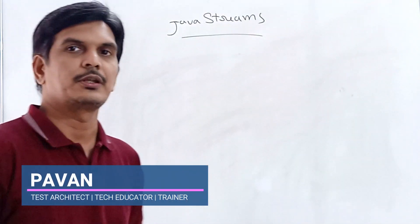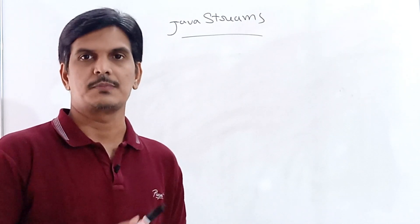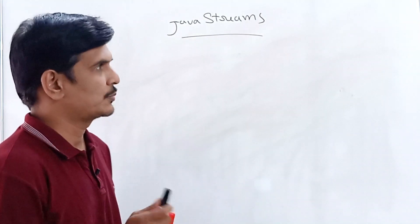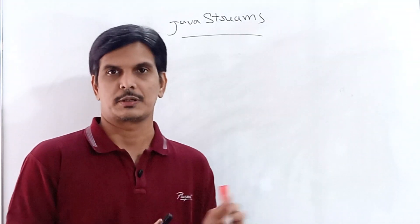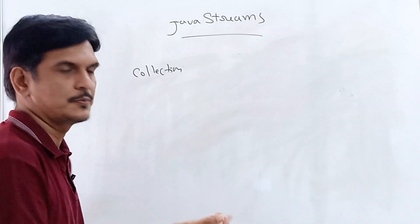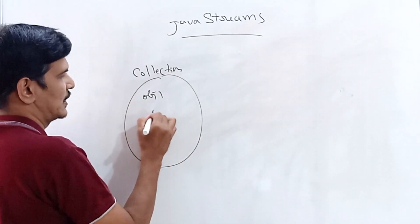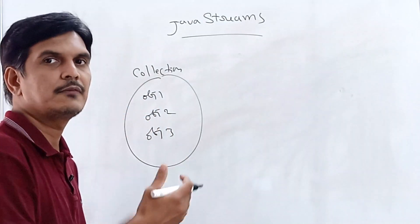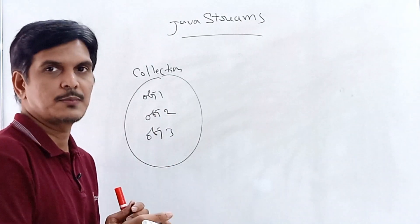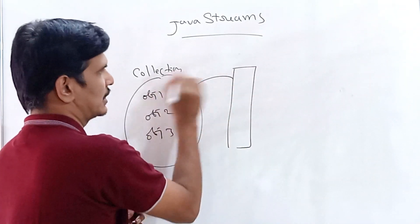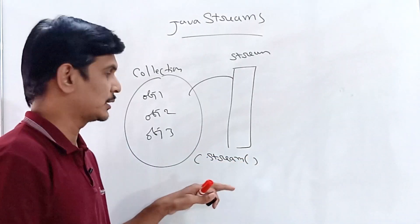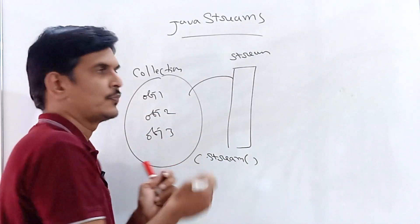Hi everyone, welcome. In our previous videos we have seen how we can work with Java streams, including how to use filter, map, and flat map. Let me just recap what we have covered so far and what else we have to cover as part of streams. A collection is basically a group of objects, and to process the data inside the collection we use a stream concept. We can add the collection to the stream by using the dot stream method.